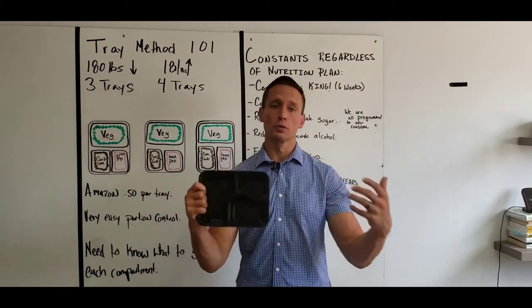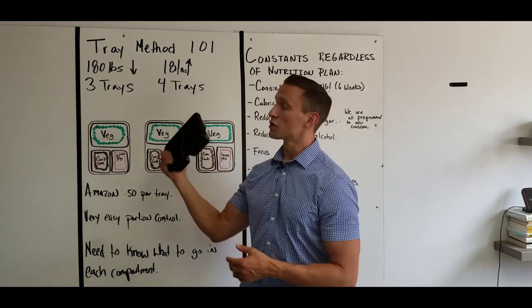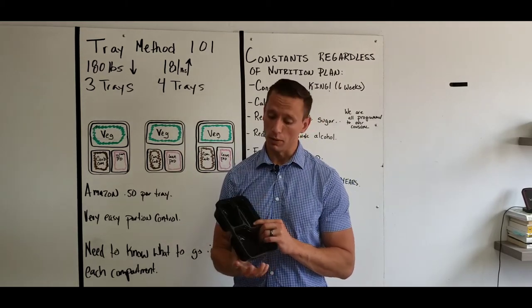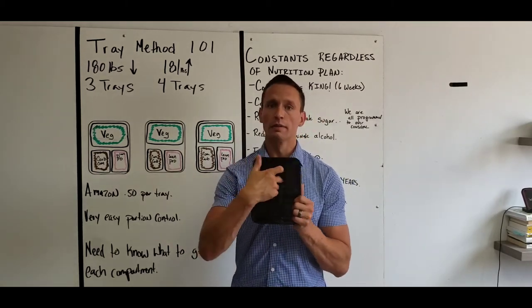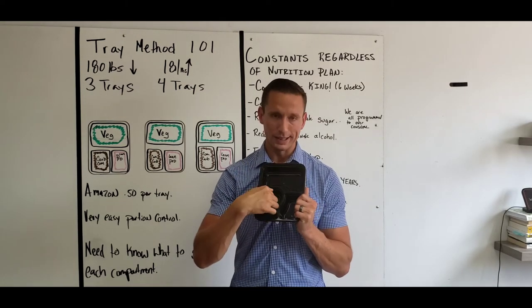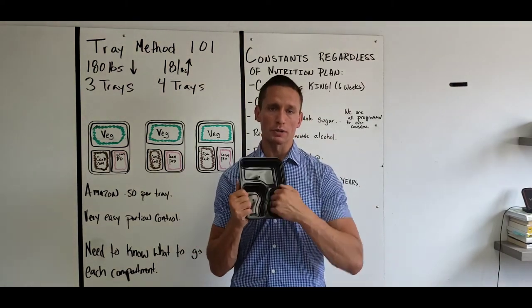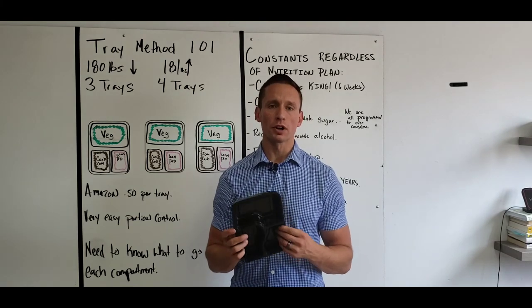So keep in mind those constants that always hold true. Caloric deficit, reduce the sugar, reduce the booze, focus on your sleep. Then the tray method is a very, very simple way. Recap. Vegetable. Big portion. Lean protein. Smaller. Complex carbohydrate. Smaller. 180 pounds and under.